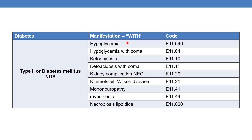For diabetes mellitus with hypoglycemia, the code is E11.649. For hypoglycemia with coma, the code is also E11.649. For diabetes mellitus with ketoacidosis, the code is E11.10. For ketoacidosis with coma, the code is E11.11.